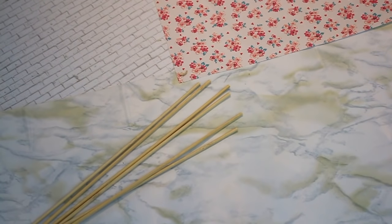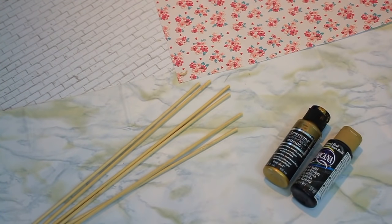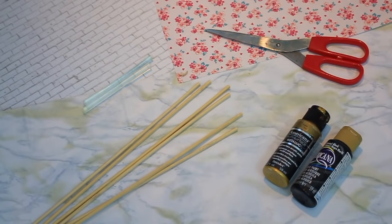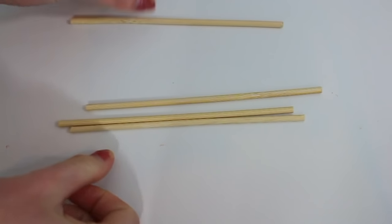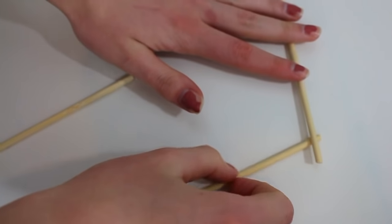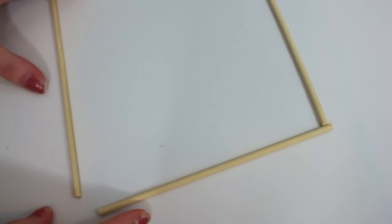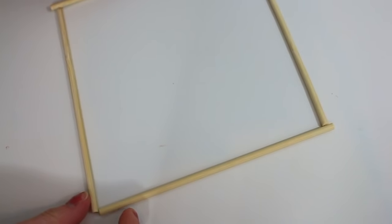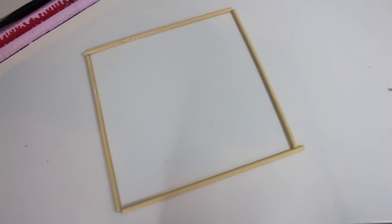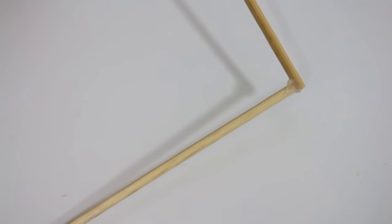For the grid, you're going to need some bamboo skewers, some paint. I'm using gold, but you can really use any color you want. You're going to need hot glue and some scissors. Okay, so this is going to sound kind of confusing the way I'm explaining it, but just stay with me. Trust me, it's really simple. So all you're going to need are your bamboo skewers and just cut four pieces that are the exact same length. And then you're going to form a square out of them like I'm doing here. And you're going to use hot glue to glue that all together. And this square is going to be the base of our grid.